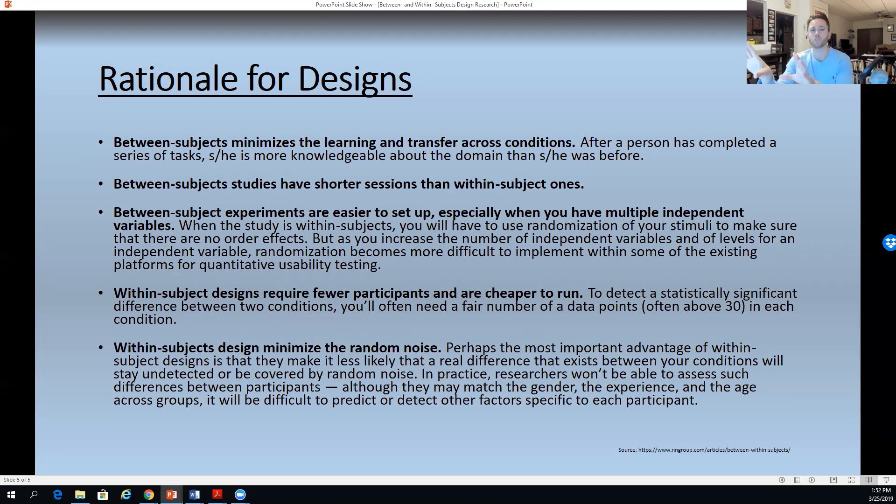And then finally, the within subjects design minimizes random noise. If we have two groups of students back to the between groups design, oftentimes there's other factors that led to them coming that day. Whether they ate breakfast, whether they are in a good mood, whether they had a car accident on the way to the research study, all those things matter. And by reducing two groups of 30 down to just 30 people who are receiving the same treatment, we know that we can reduce those extra variables and what they call the random noise for the within subjects design.